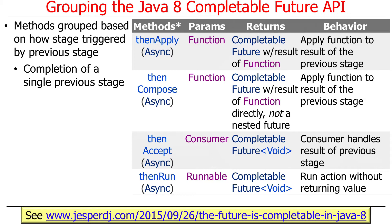As a typical example, you might say supplyAsync, which will start something running in the background. And then you would say thenApply, which says after that async operation finishes, run this action. So thenApply gets triggered after one thing finishes — the supplyAsync method that ran before it. This tells you what parameters are passed in, what the return values are, and what the behavior is. We're going to show examples of a bunch of them.